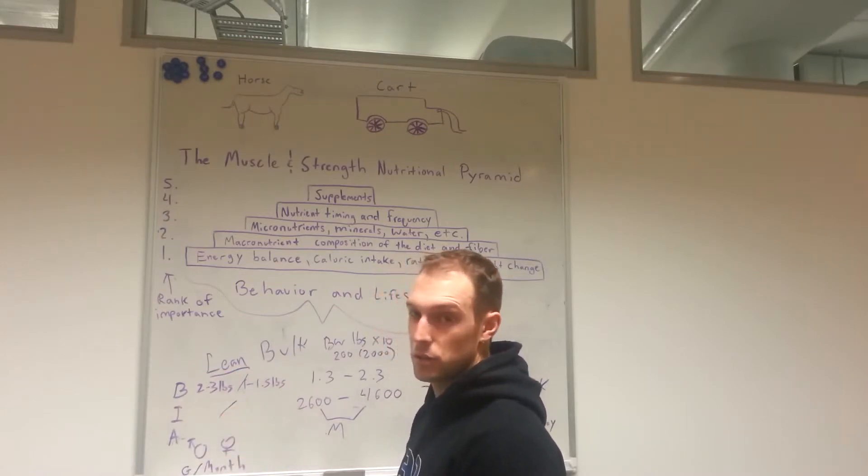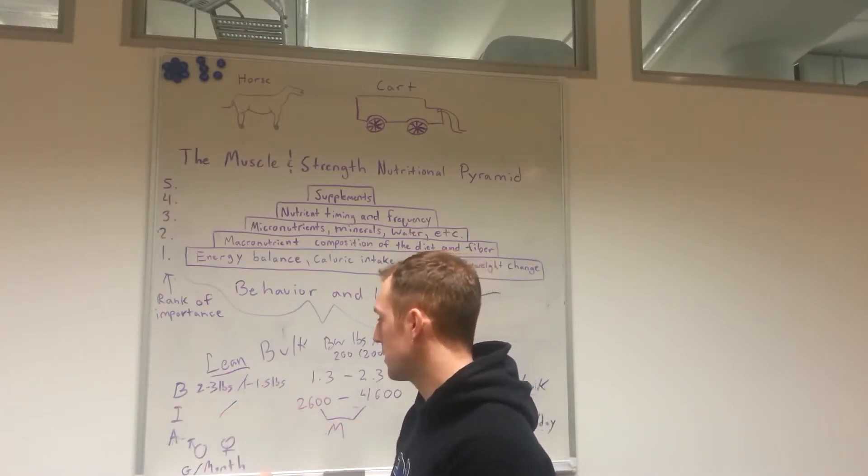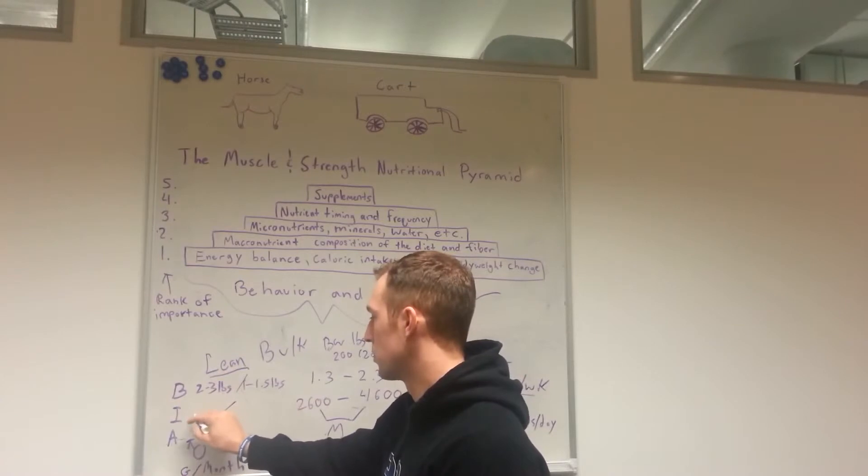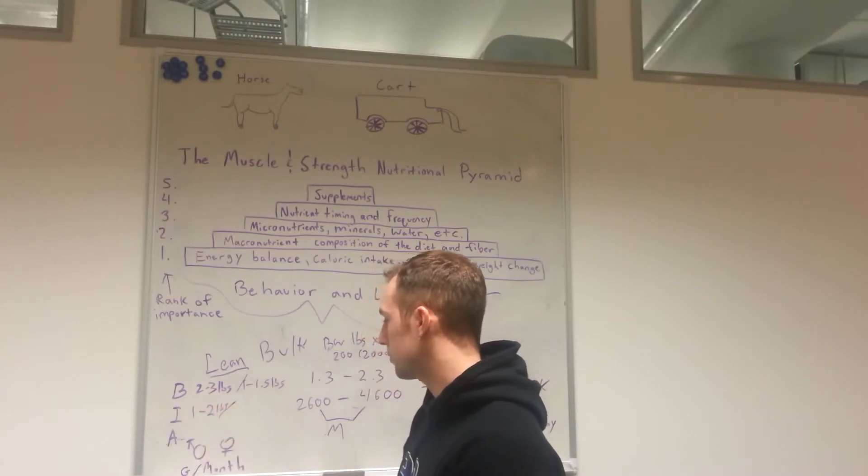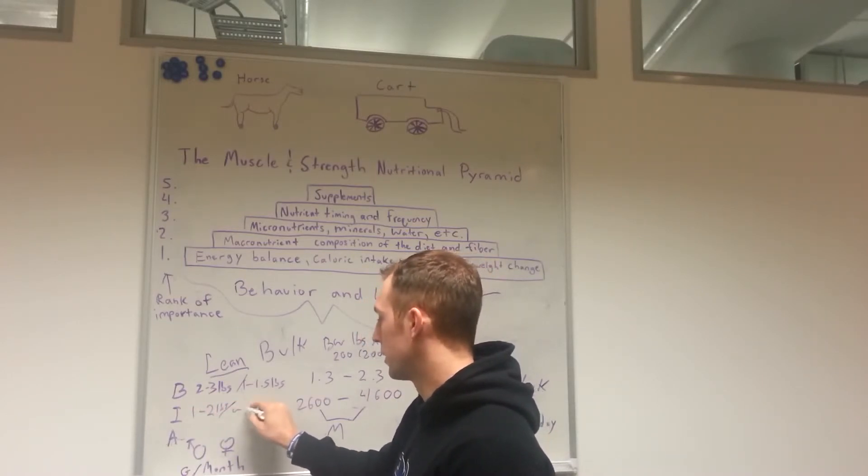Intermediates, we want to slow that down a little bit just because you're closer to your maximal rate of muscle mass. And now we're going to be talking somewhere between one to two pounds a month. Females, once again, we're talking maybe half that, so roughly one pound a month.